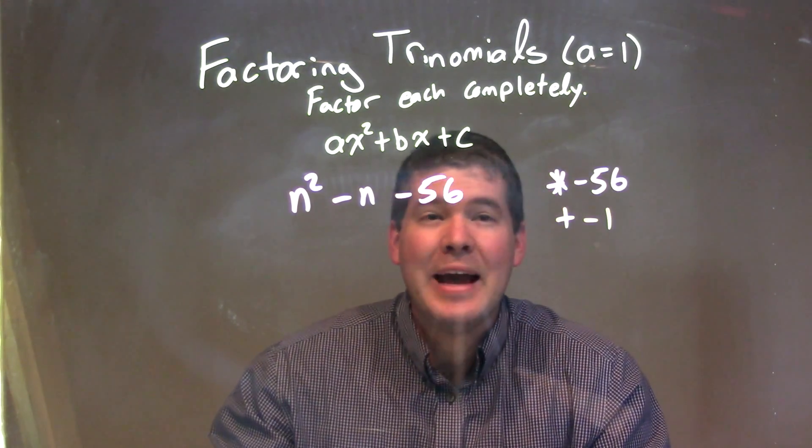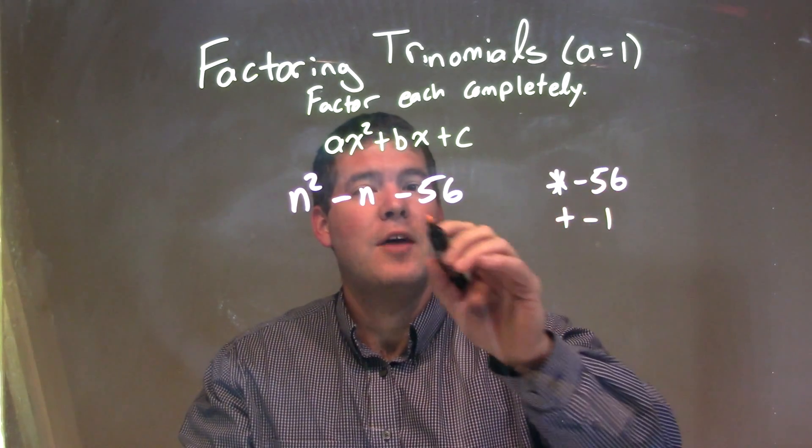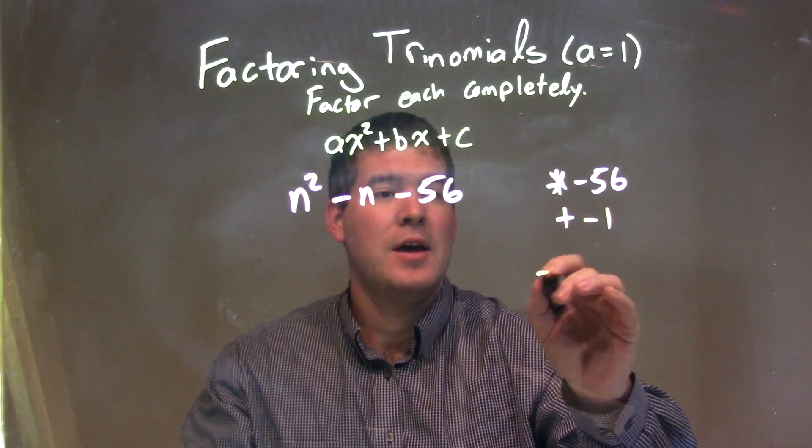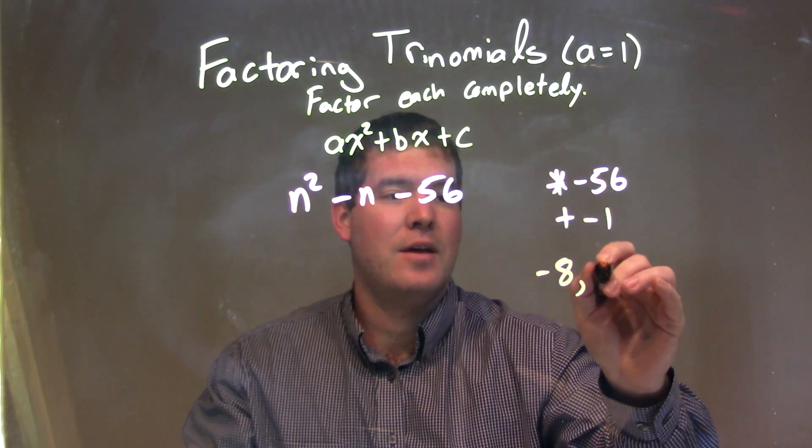Well, I know 8 times 7 is 56. So if I'm going to have two of them that are multiplying to negative 56 but adding to be negative 1, I'm going to make the 8 negative and the 7 positive.